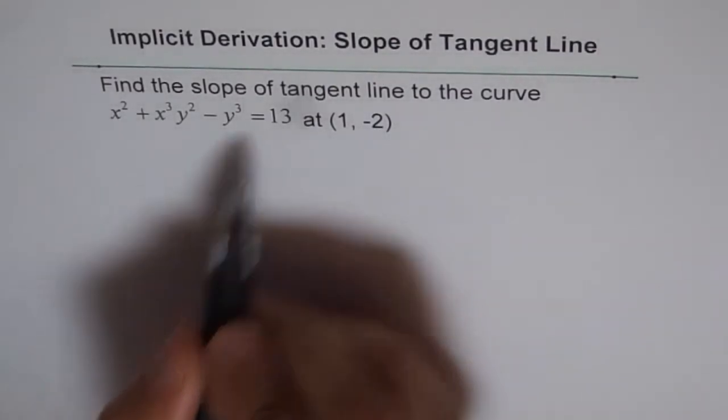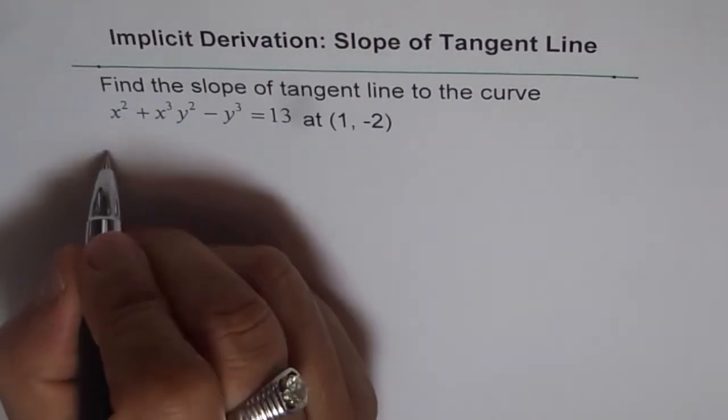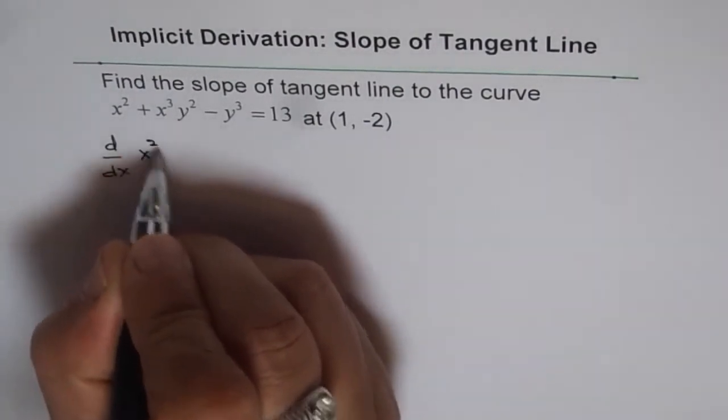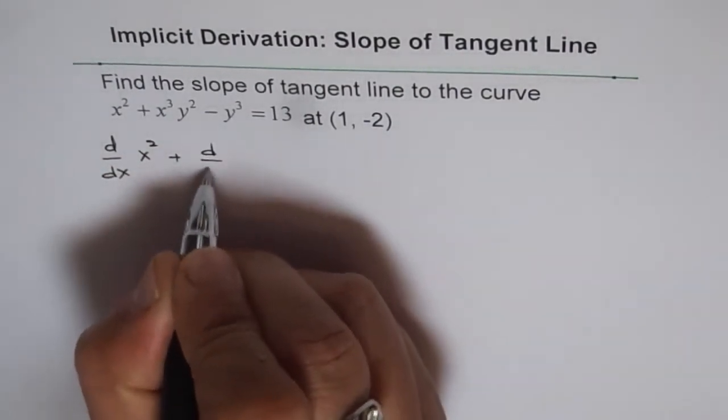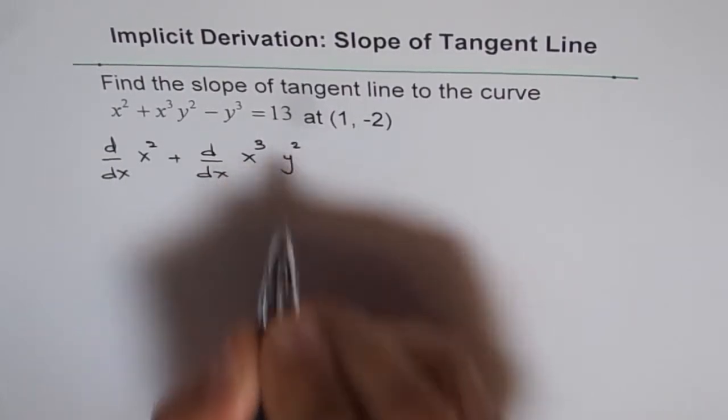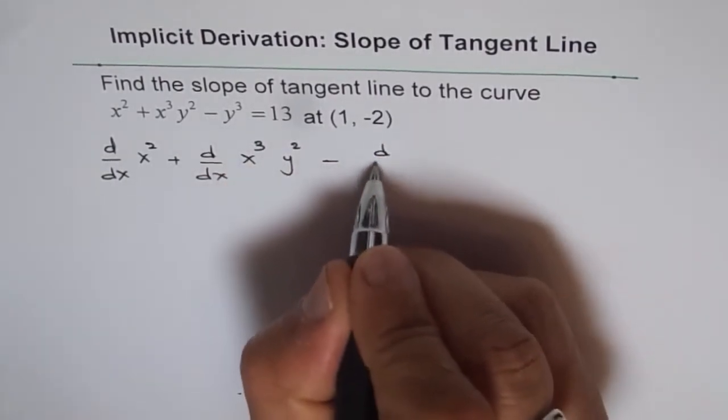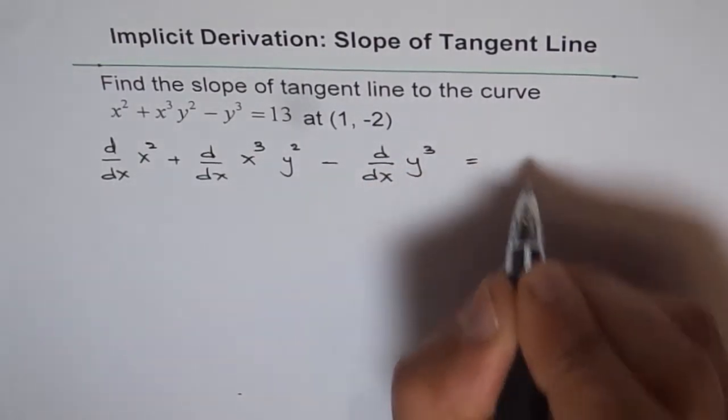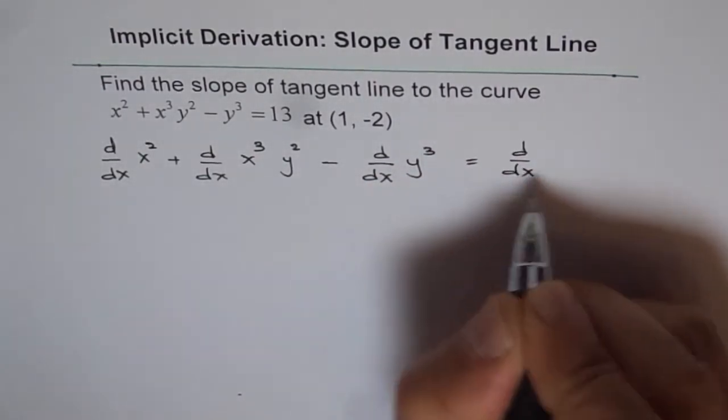So here is how we should do it. Let's differentiate the equation on both sides with respect to x. So we get d/dx of x² + d/dx of x³y² - d/dx of y³ = d/dx of 13.